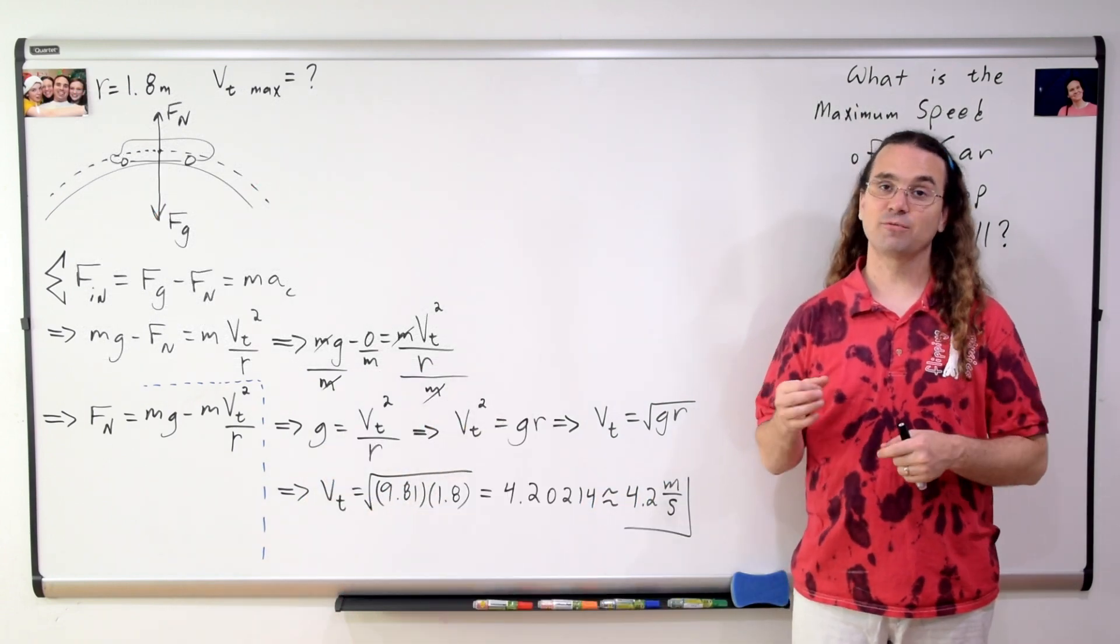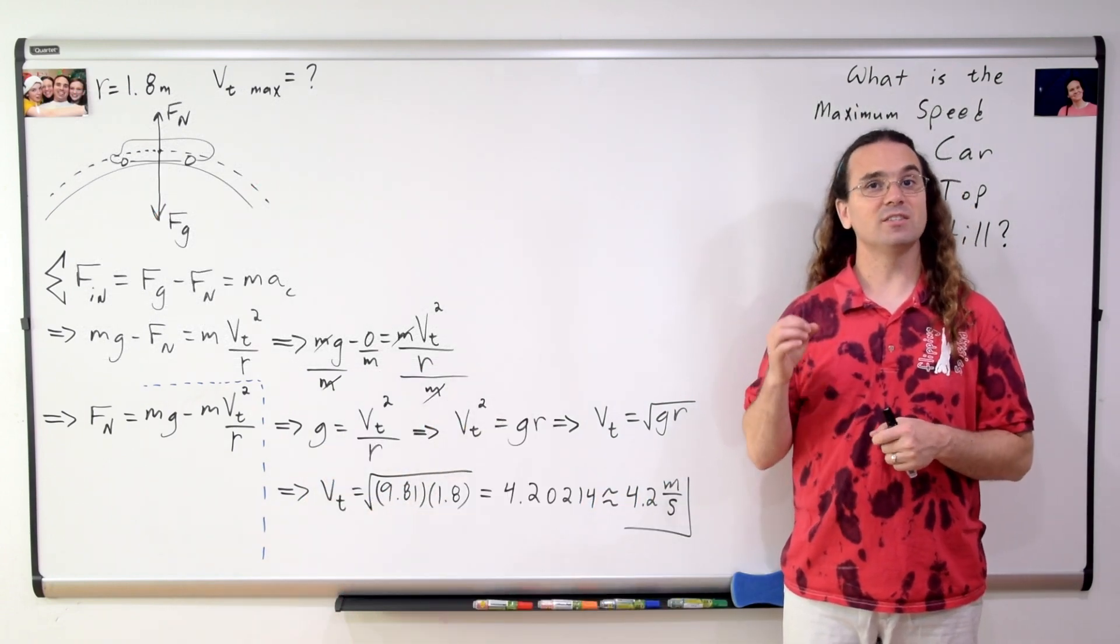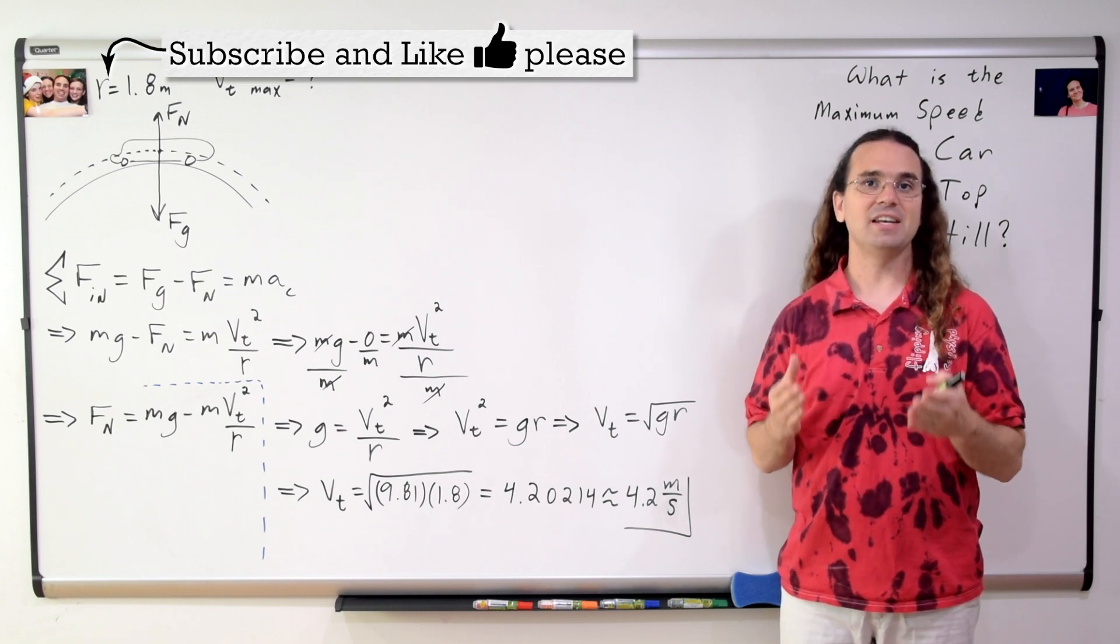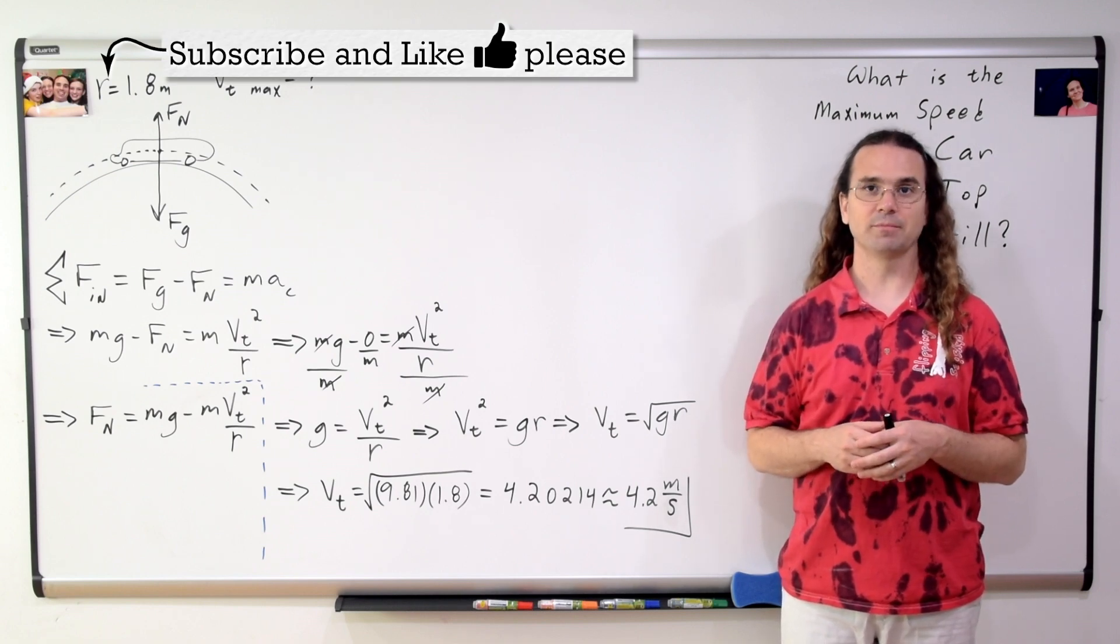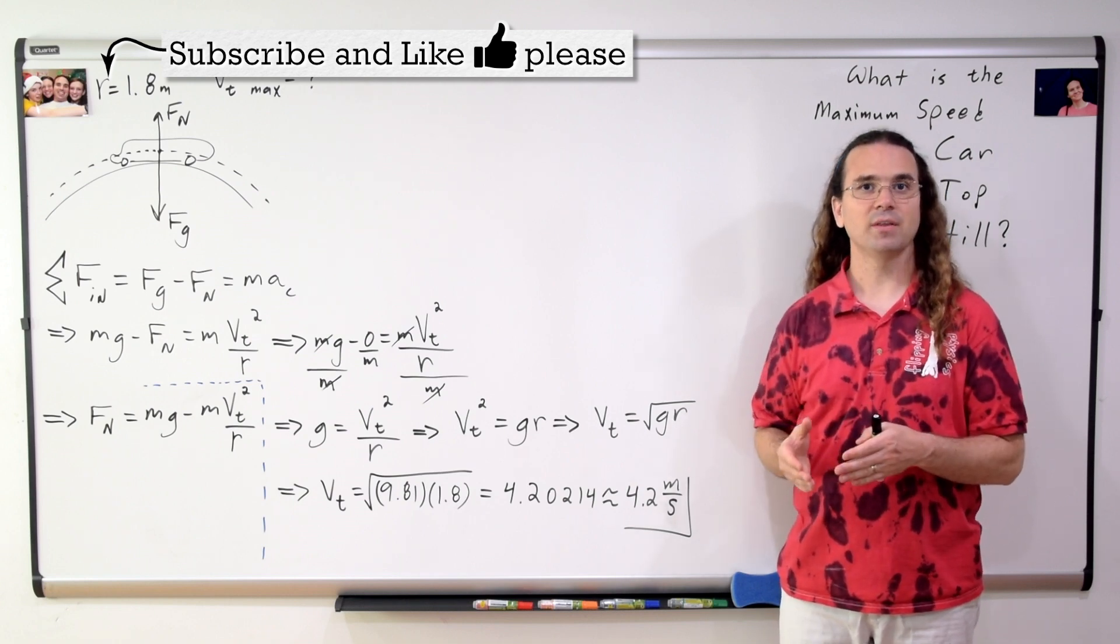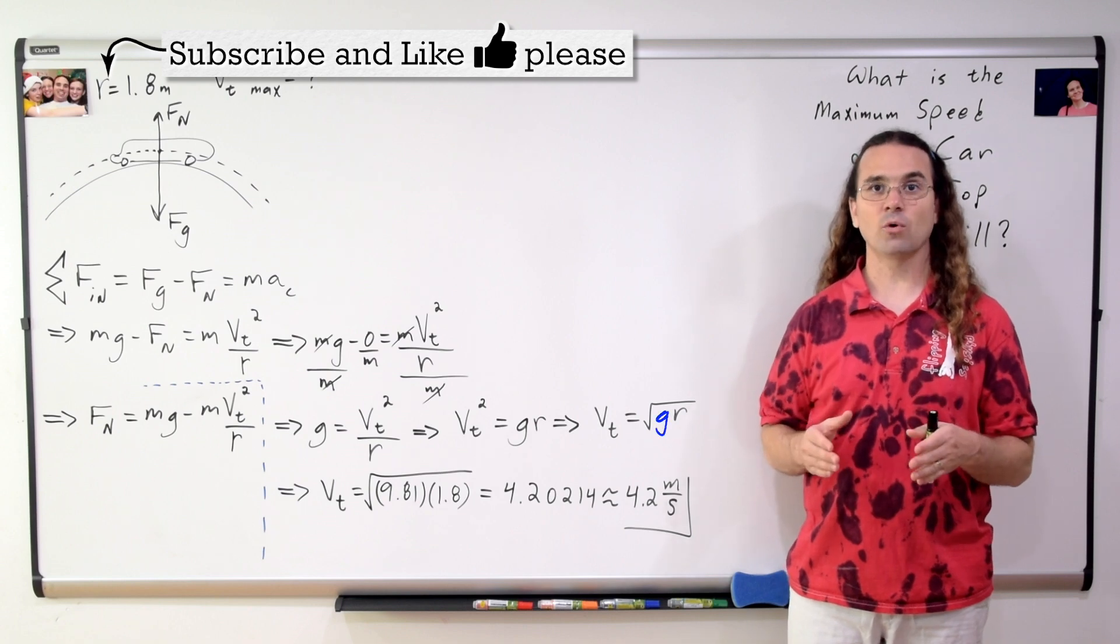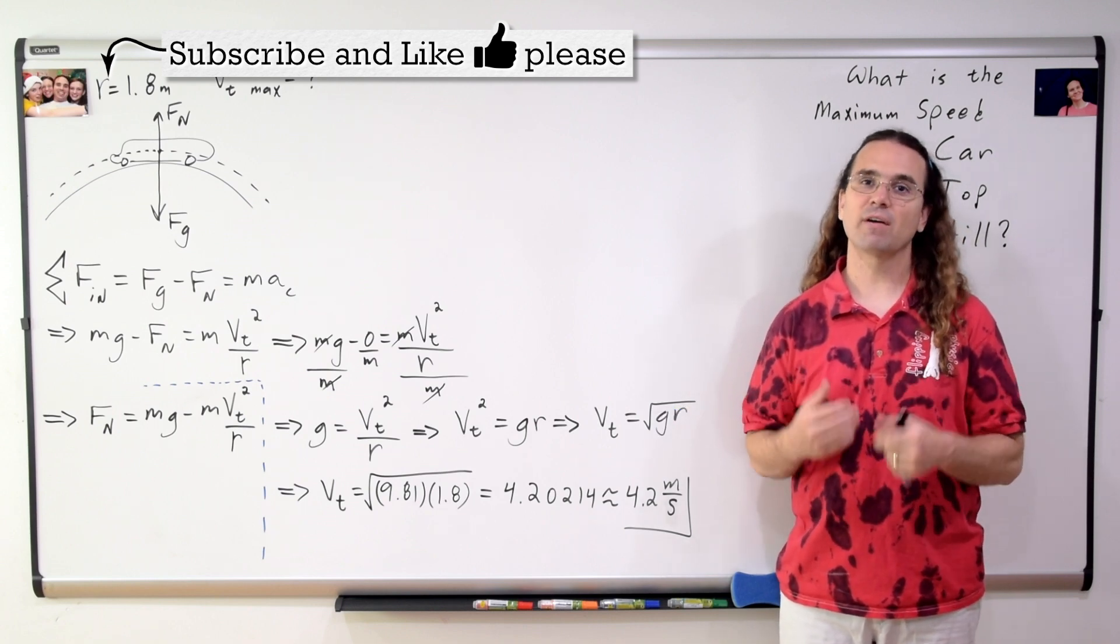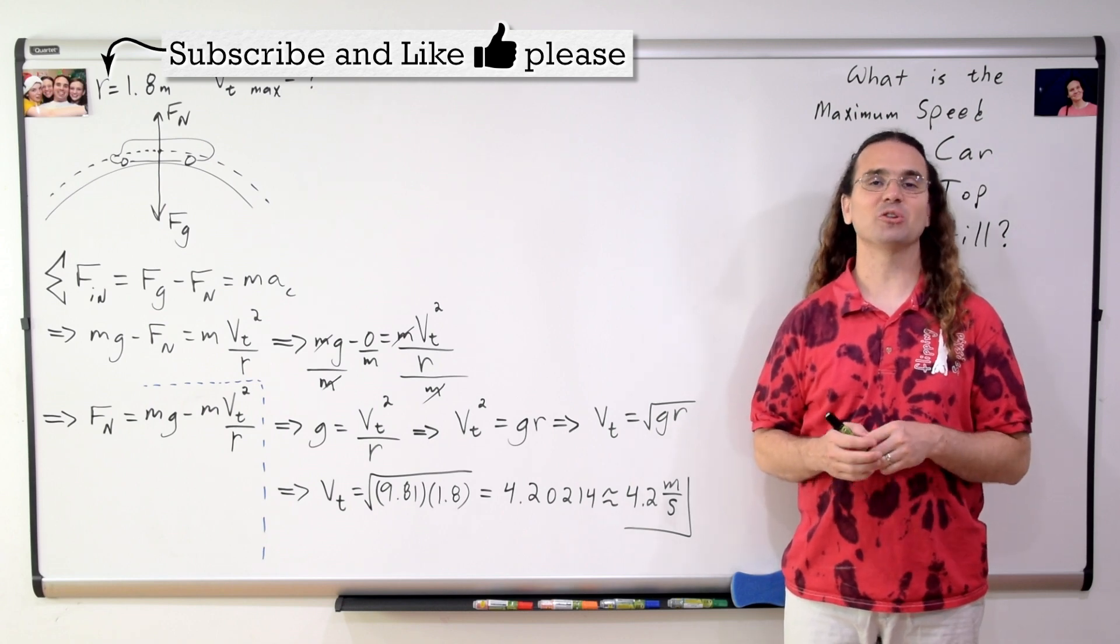That is correct. 4.2 meters per second is the maximum speed this toy car can move on this hill and not enter into projectile motion. Notice, this value is independent of the mass of the vehicle. It only depends on the planet you are inhabiting and the radius of the hill. Thank you very much for learning with me today. I enjoyed learning with you.